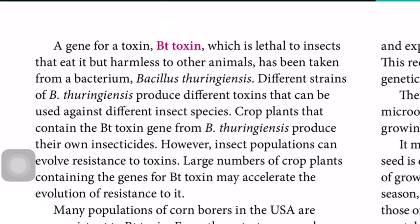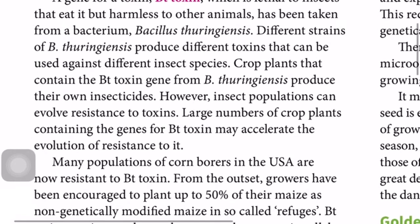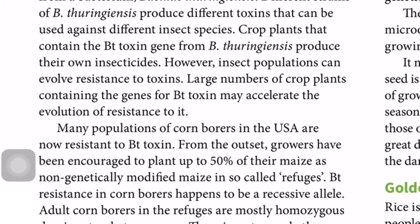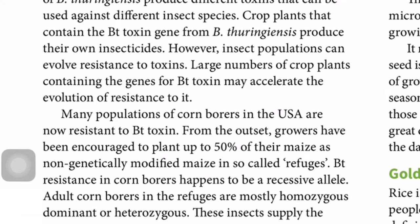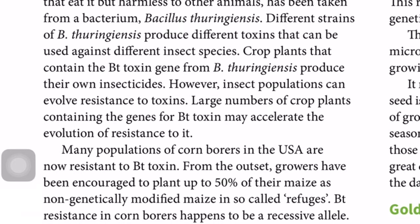A gene for Bt toxin — which is lethal to insects that eat it but harmless to other animals — has been taken from the bacterium Bacillus thuringiensis. Different strains of this bacterium produce different toxins that can be used against different insect species. The crops are made to produce Bt toxin targeting only the specific pest insect, not other animals or insects.